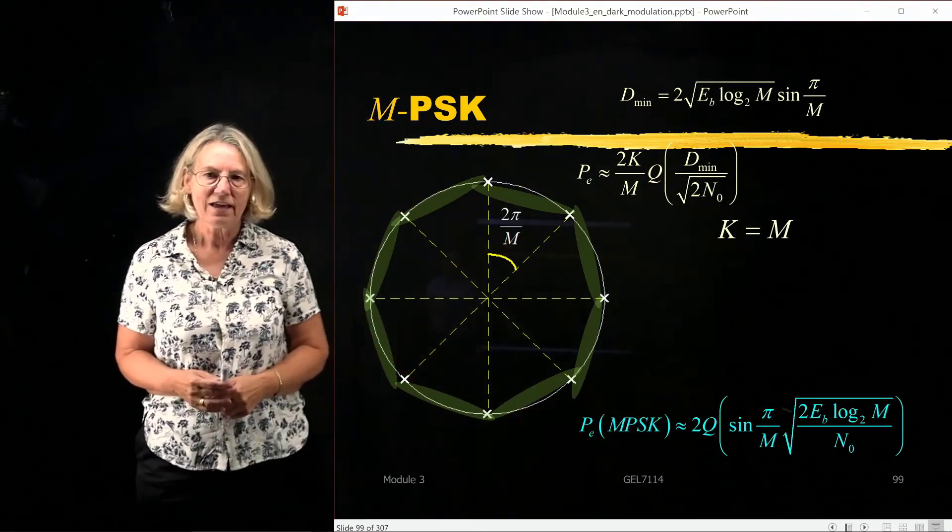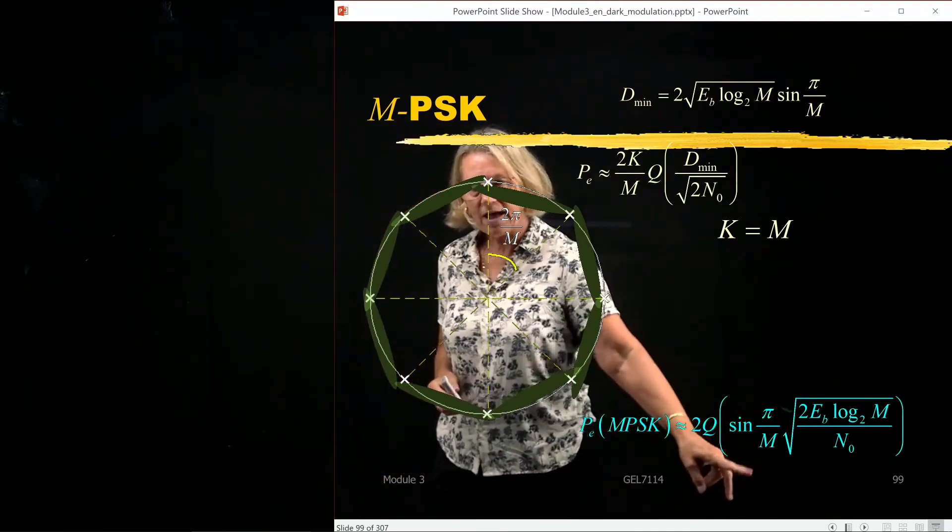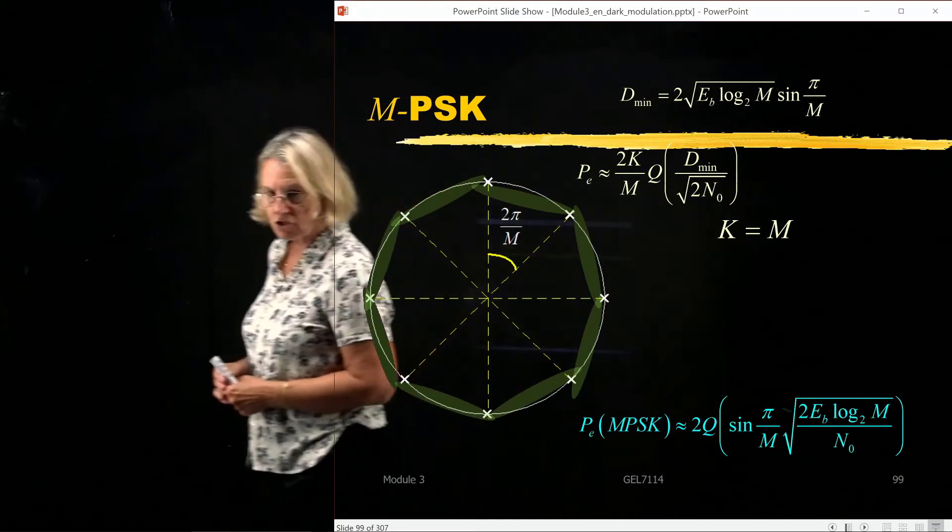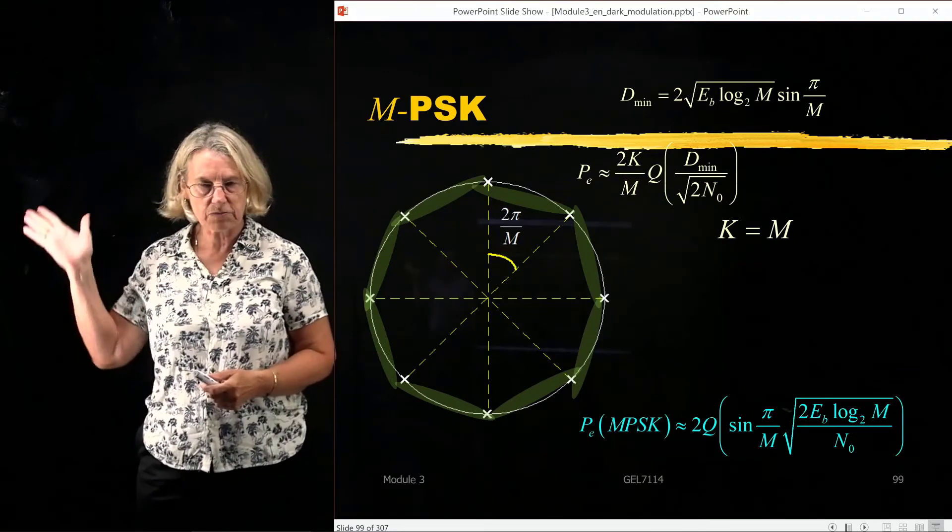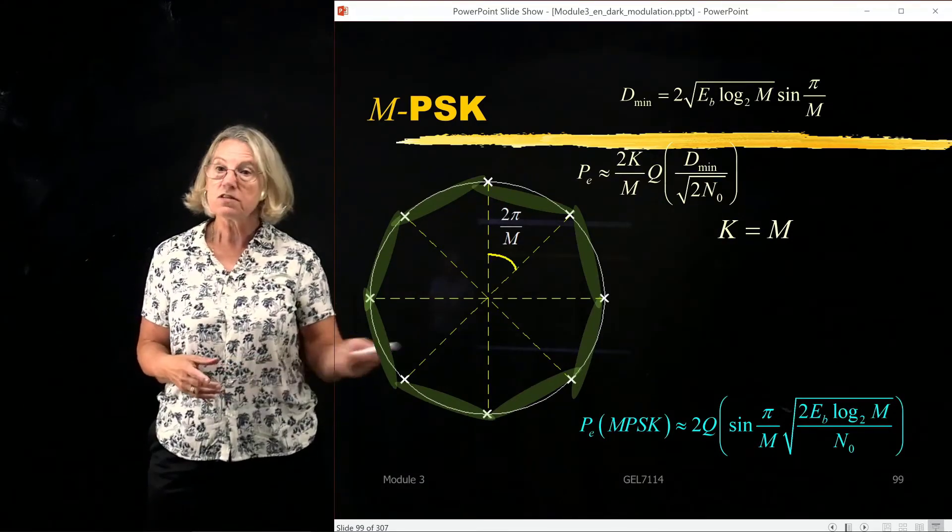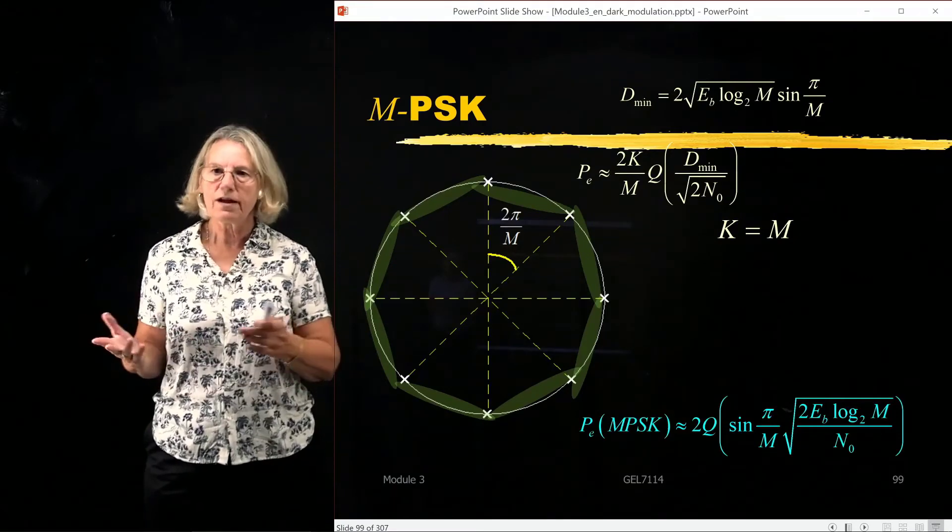So M-PSK, the probability of error is 2Q. And then we have the sine of π over M times the square root 2EB log_2 M divided by N0. Where, of course, N0 is the power spectral density of the noise. So this is the equation that you will find in all textbooks for M-PSK.